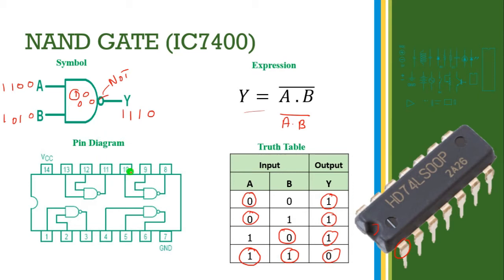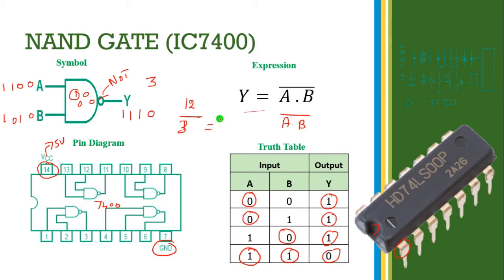This is the pin diagram of the NAND gate IC — the IC number is 7400. The 14th pin is the VCC pin; 5 volts to be applied here. The 7th pin is the ground pin, to be connected to ground. The remaining 12 pins are available for the 2-input NAND gates — each gate has 2 inputs and 1 output, totaling 3 terminals, so 12 divided by 3 gives 4 NAND gates available in this IC 7400.